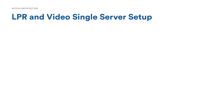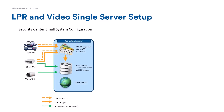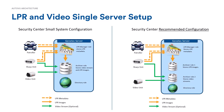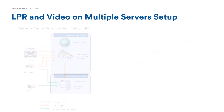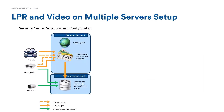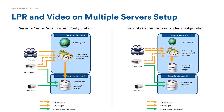In a small single-server system, the directory, archiver, and LPR manager all run on one server. However, for stability and performance reasons, it's recommended to create two archiver roles within that single server — one for video recordings and one for license plate images. In a larger multi-server environment, the same principle applies: best practice is to dedicate a separate archiver to the LPR manager and use a different archiver for video streams from security cameras.